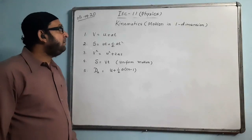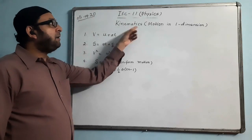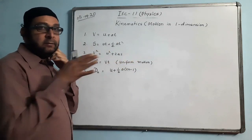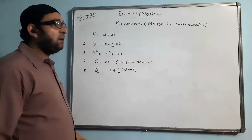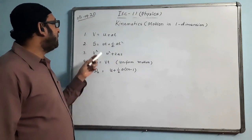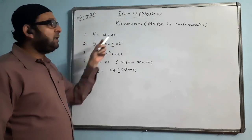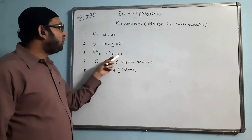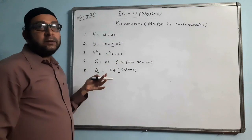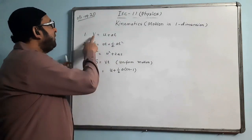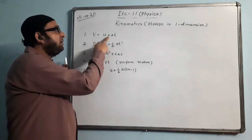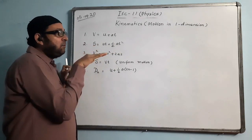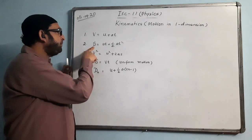Today we are starting a new chapter: kinematics, that means motion in one dimension — in other words, motion in a straight line. In lower classes, class 9, we used to learn three formulas: first formula was v = u + at, second was s = ut + ½at², third formula was v² = u² + 2as. V is final velocity, u is initial velocity, a is acceleration, t is time, and s is distance or displacement.